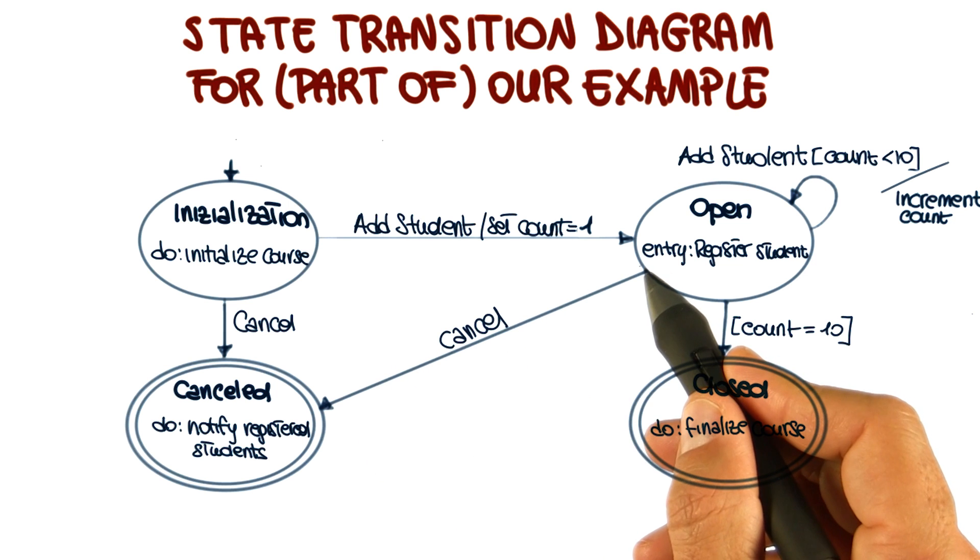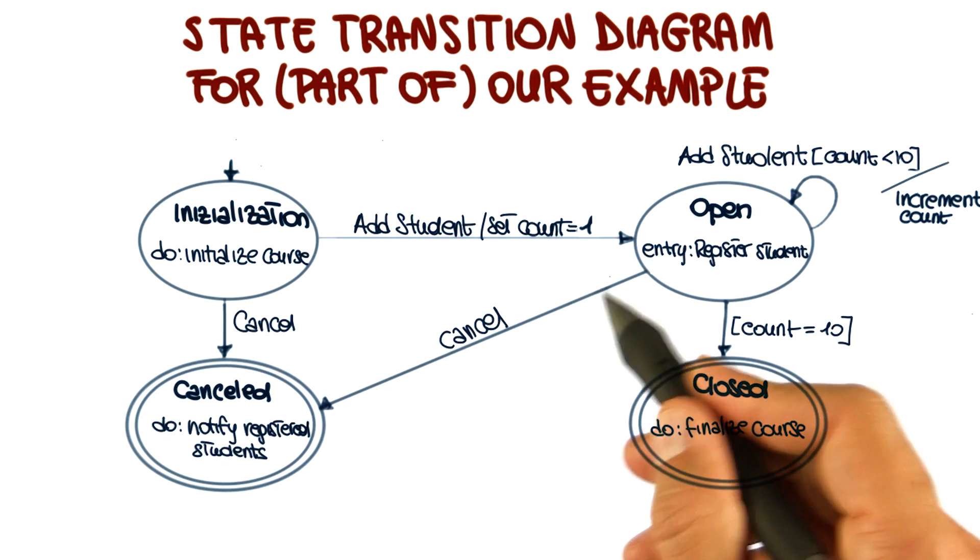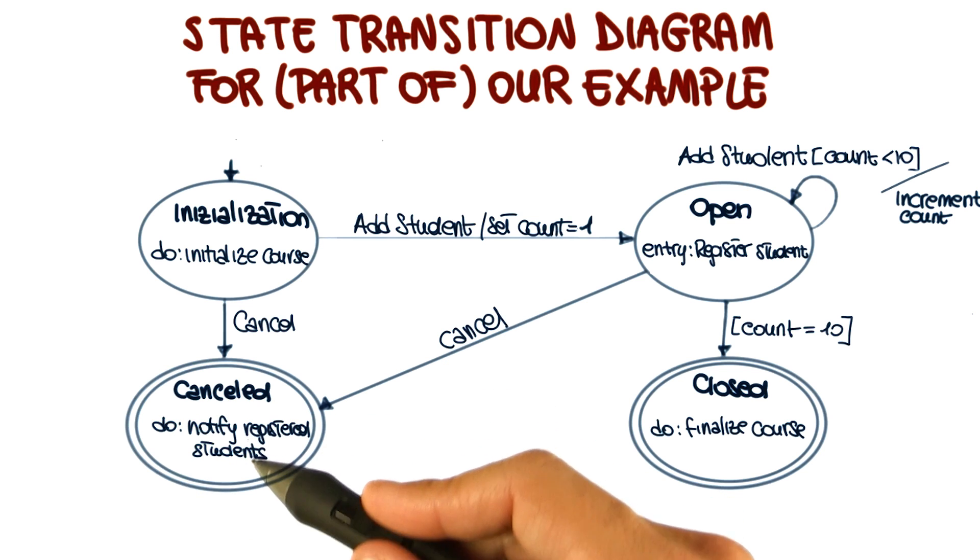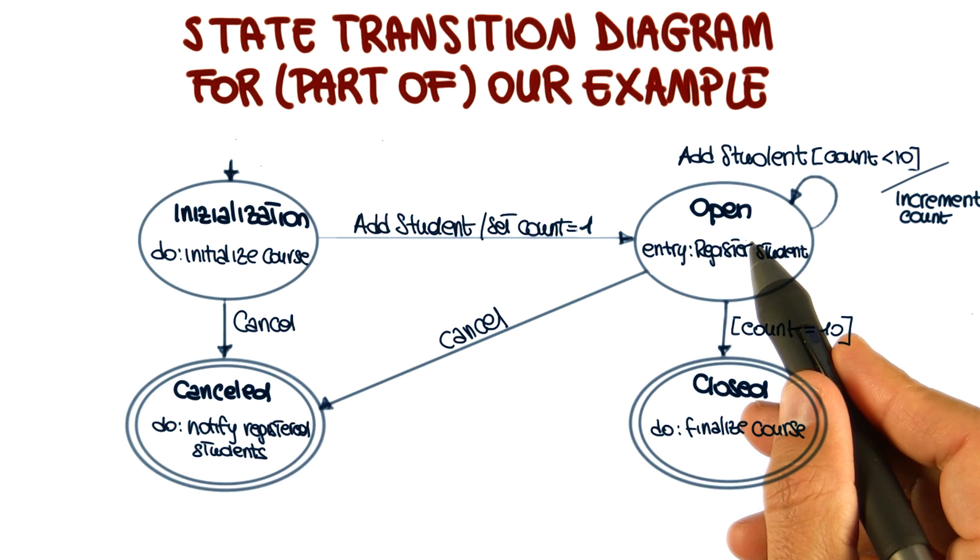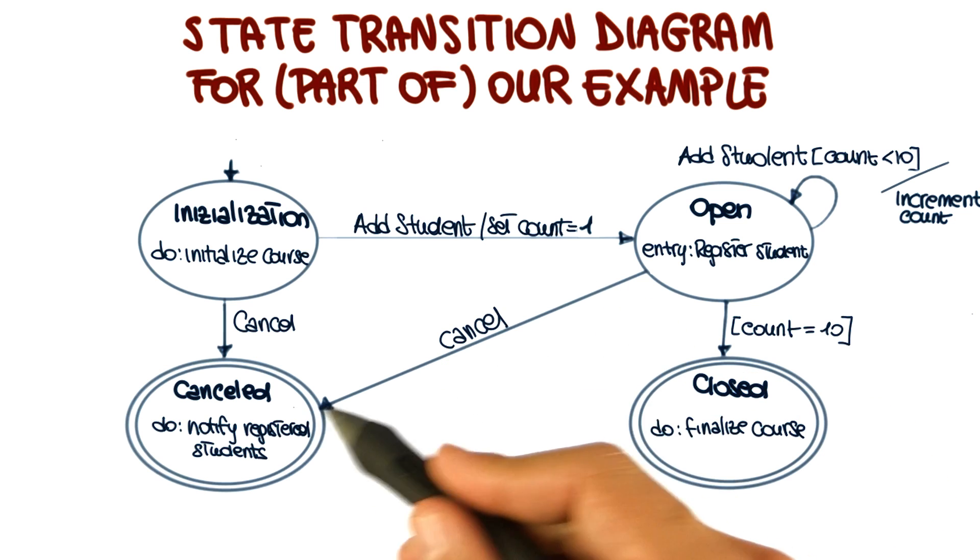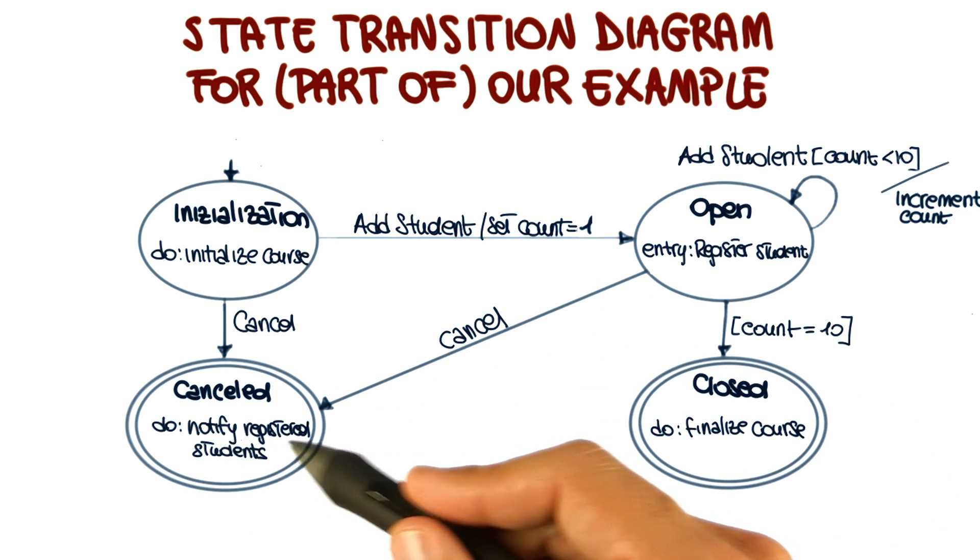Another possibility is that when we are in the open state, the course is canceled. And if the course is canceled, in this case, we go again to the canceled state. But here, the activity of notifying registered students makes more sense, because we will have at least one registered student in this state, and therefore we'll need to notify such student that the course offering has been canceled.